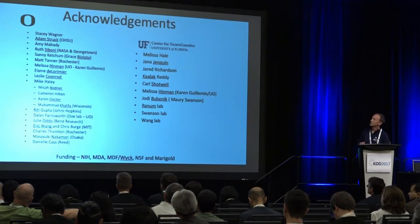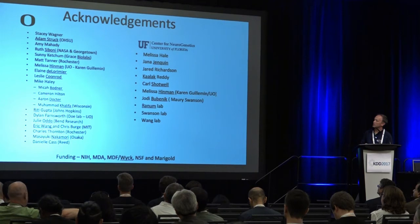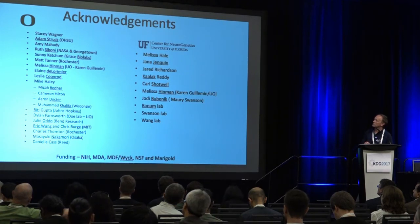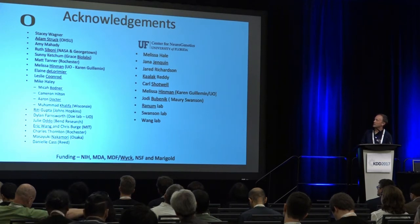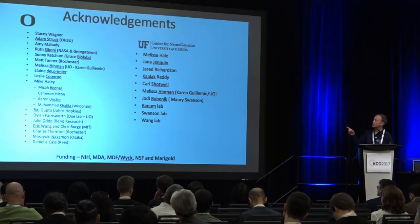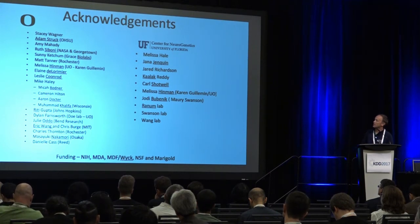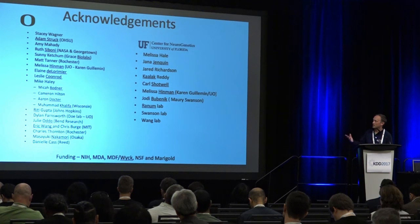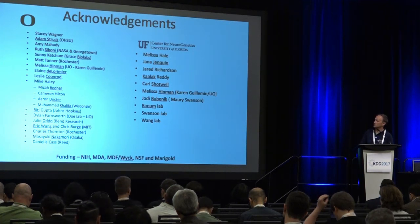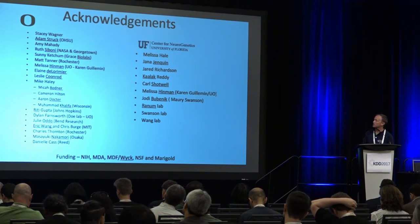This work started at the University of Oregon where I began my research group in 2002. Adam Struck, a computational biology student now at Oregon Health Sciences University, led the deep sequencing data analysis, in collaboration with Eric Wang and Chris Burge at MIT. Eric is now a new faculty member at UF where we're building a Center for Neurogenetics with about 40 people. Funding was provided by the NIH, the Muscular Dystrophy Association, the Myotonic Dystrophy Foundation, and other foundations. Thank you for your time.